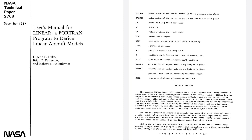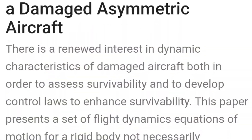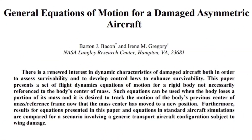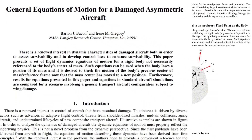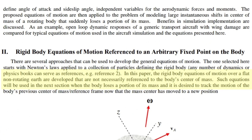Once more, in Technical Paper number 2768 from 1987, the FORTRAN program overview states that its non-linear equations represent flying in a stationary atmosphere over a flat non-rotating Earth. Another file on the NASA NTRS server from 2007, titled 'General Equations of Motion for a Damaged Asymmetric Aircraft,' follows suit on page two, where the rigid body equations of motion over a flat non-rotating Earth are developed.